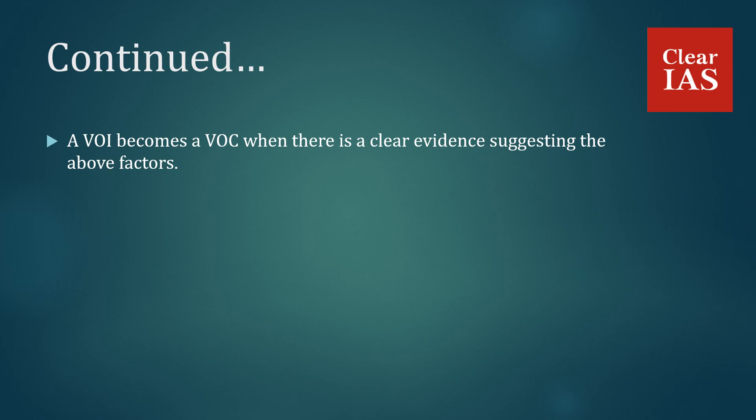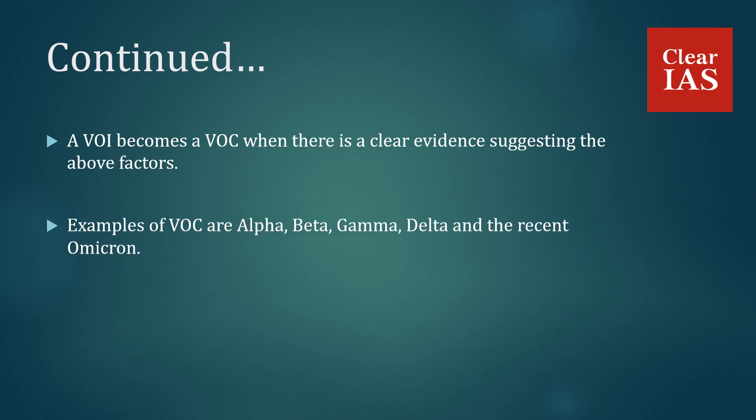So in simple terms, whenever there is evidence suggesting a variant is capable of exhibiting the above factors, then it is considered to be a VOI, and whenever it is proven beyond doubt that the variant is capable of transmitting at higher rates and causing severe disease, then it is classified as a VOC. Examples of VOC are Alpha, Beta, Gamma, Delta and the recent Omicron.